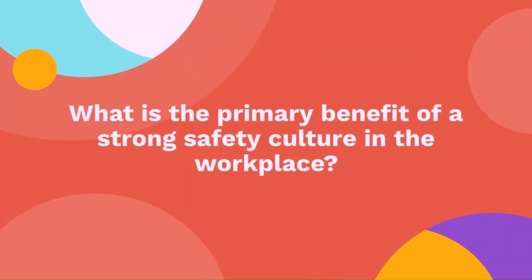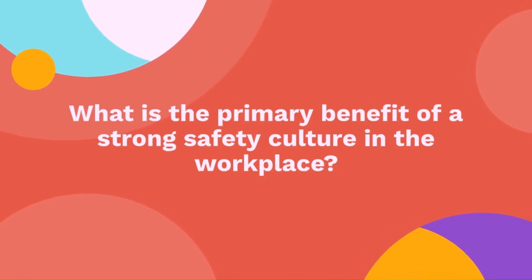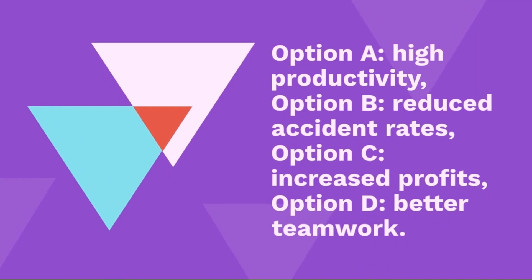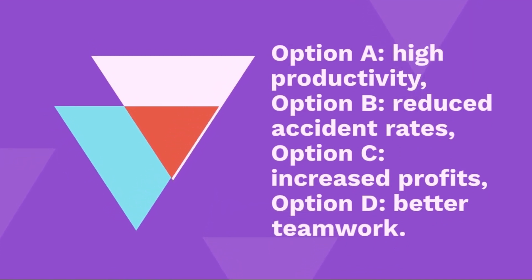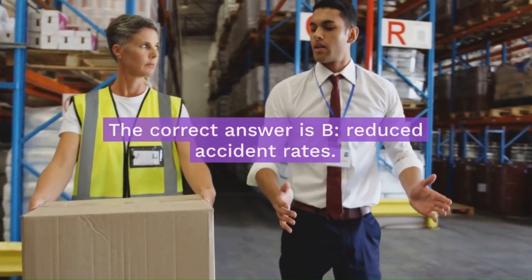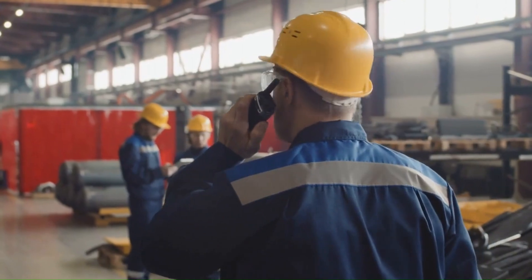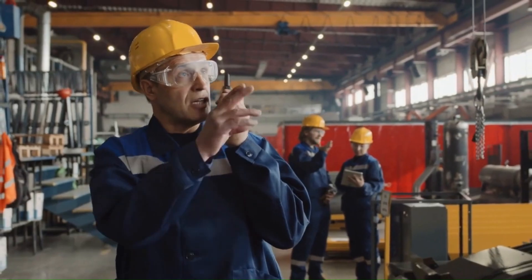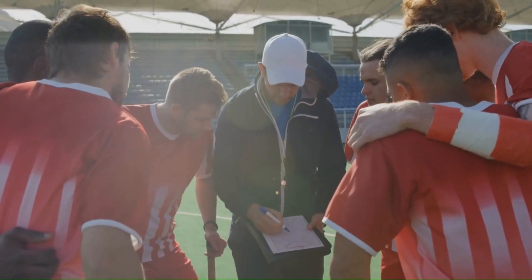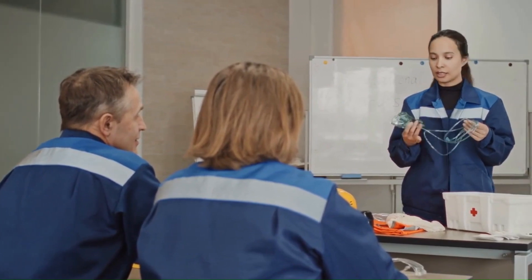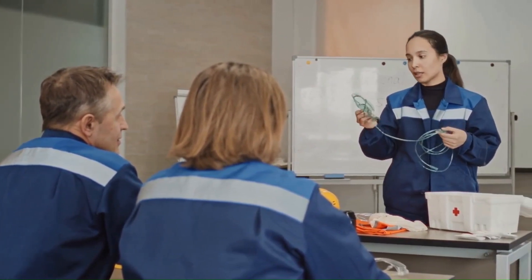Question 18: What is the primary benefit of a strong safety culture in the workplace? Option A — high productivity, Option B — reduced accident rates, Option C — increased profits, Option D — better teamwork. The correct answer is reduced accident rates. A strong safety culture means fewer accidents because everyone is aware of and follows safety practices, like how a team works together to win a game. A strong safety culture leads to fewer accidents and a healthier work environment.